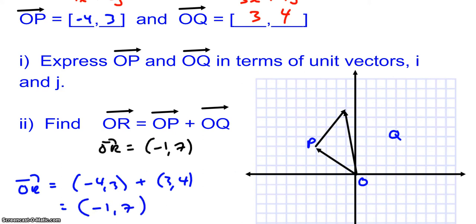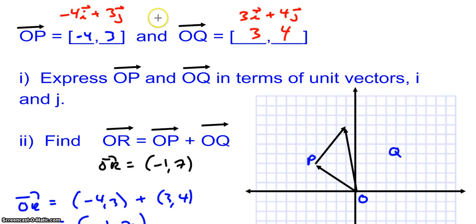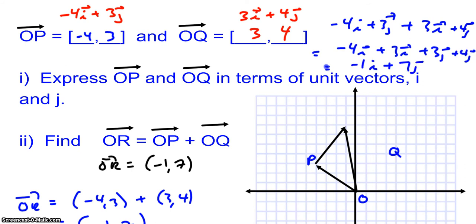Or if you wanted to, you can actually take these two vectors, so negative 4i plus 3j, and add it on to the other vector, which is 3i plus 4j. And sort of like, you know, you group all the like vectors together, and you end up pretty much, it's not the greatest, but negative 1i plus 7j, which is the same thing as negative 1 and 7.